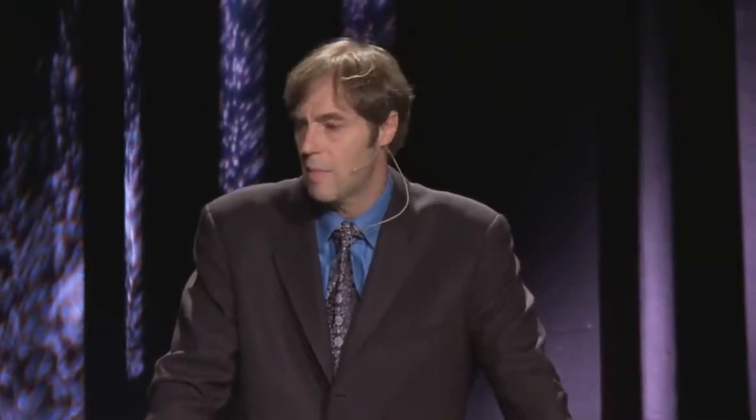Darwin was able to provide a naturalistic explanation for the phenomenon of adaptation, which to many 19th century biologists bespoke design. If organisms are adapted to their environment, if there's a fit between organism and environment, it was thought that was best explained by a designer who designed the organism to survive in that environment. But Darwin gave an account of adaptation without any need for a designer, so he eliminated the need for intelligent design. The question then is: is adaptation the only appearance of design, and if not, has natural selection explained all the others?